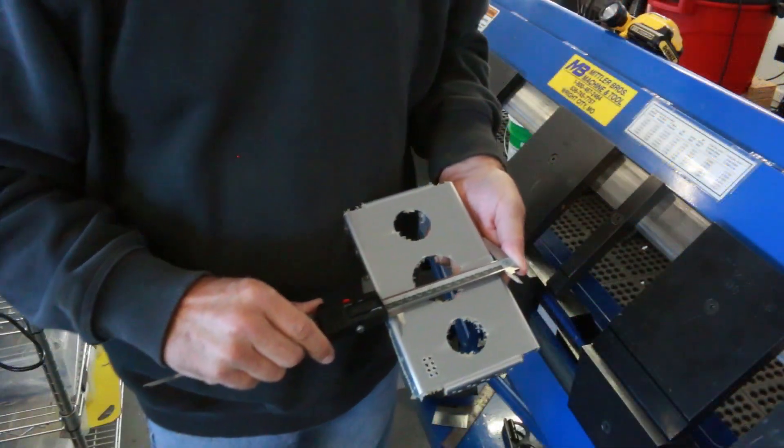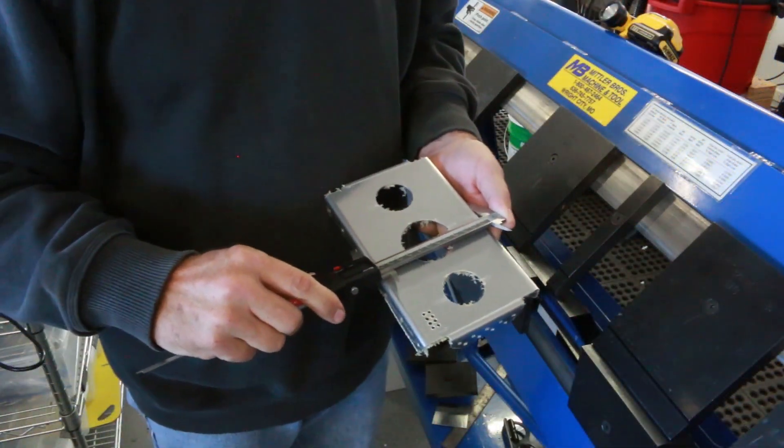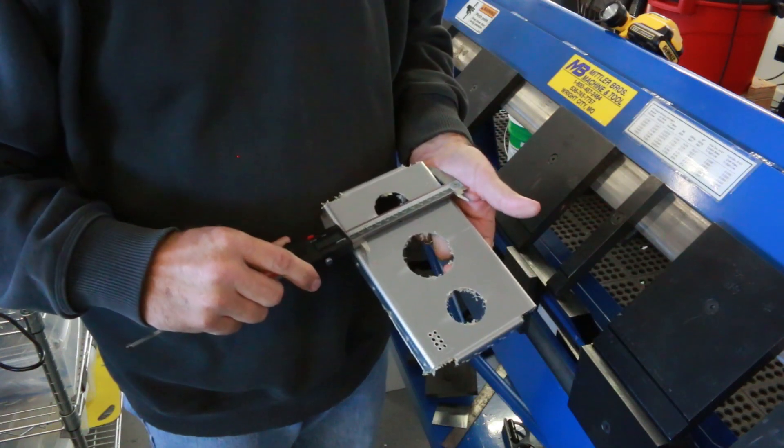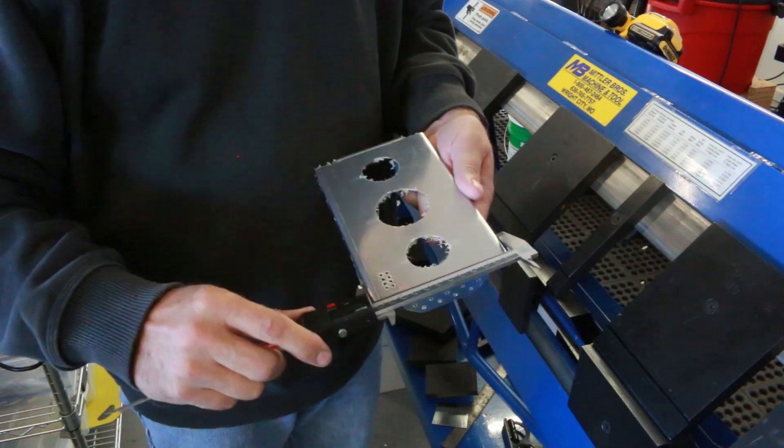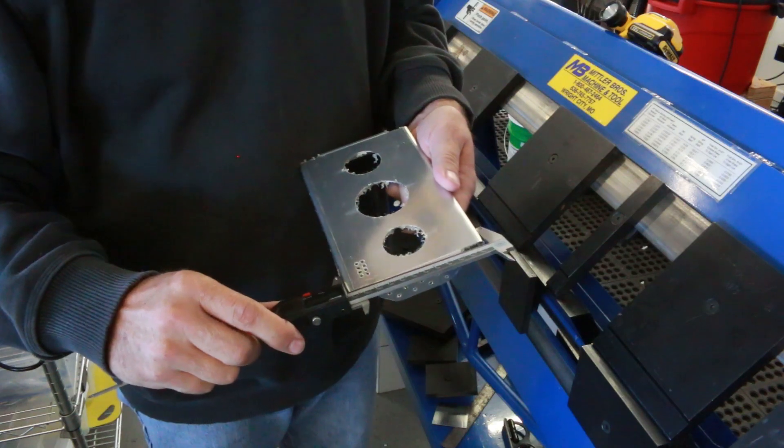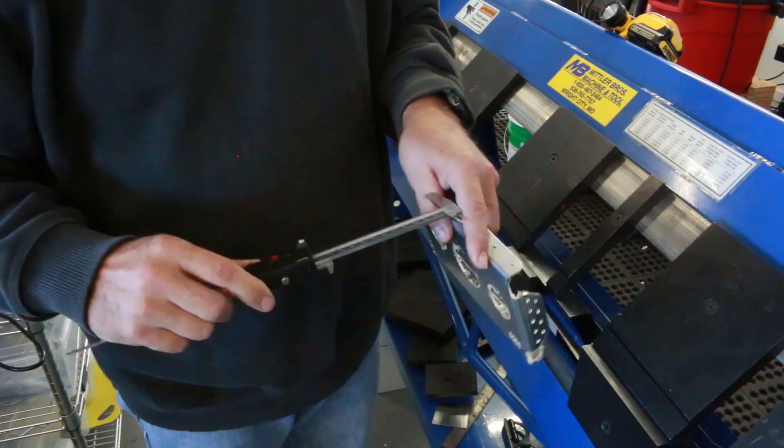In our maintenance classes, the students have a contest to see how close they can bend their part to the drawing dimensions of a sheet metal project. The students that perfect this technique can bend their parts to within ten-thousandths of an inch on the final dimensions.